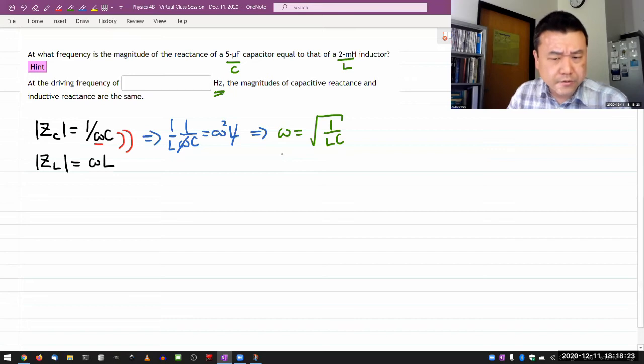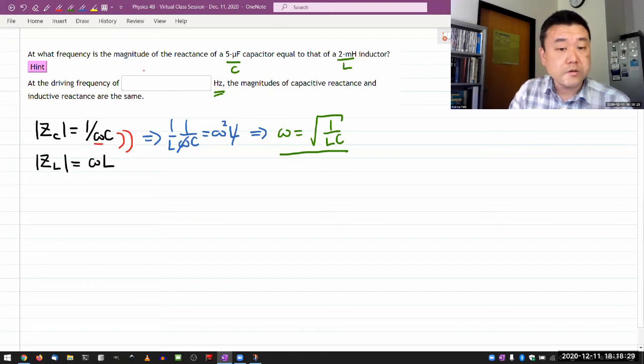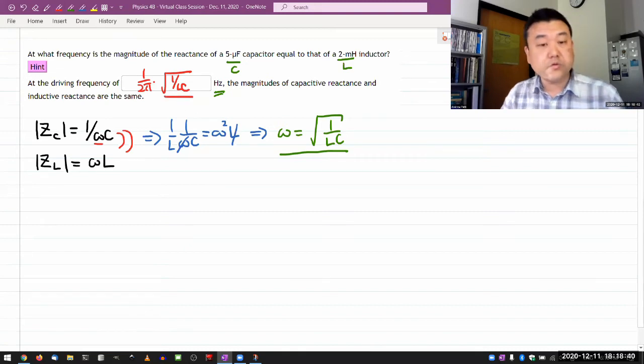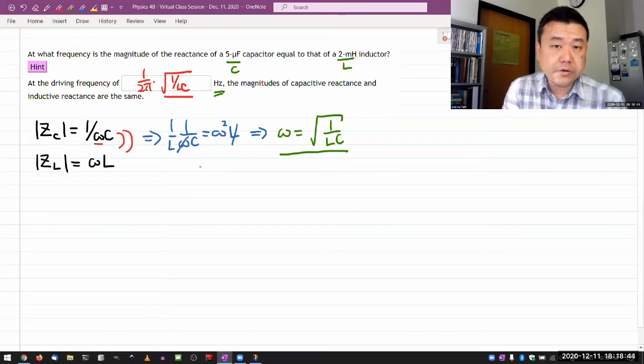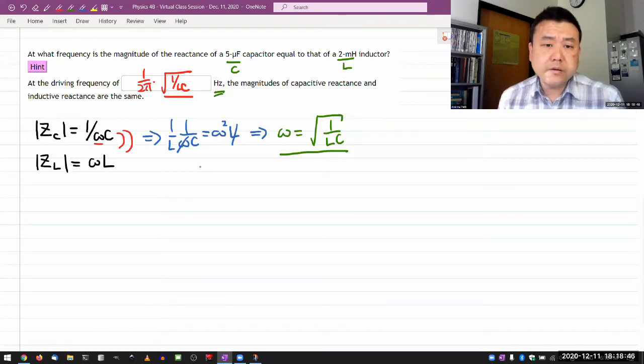I hope when you look at it, this seems familiar, and the answer here would be, you need to convert this to frequency, so it should be one over two pi to convert the radians per second to hertz times square root of one over LC. And I hope you remember the square root of one over LC from when we talked about LC circuit last week with the time-varying circuits.